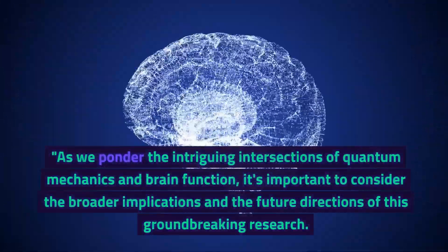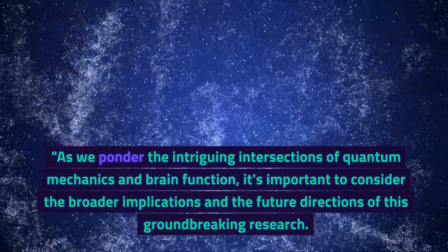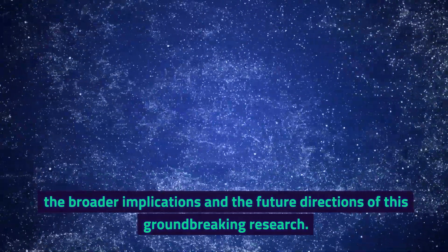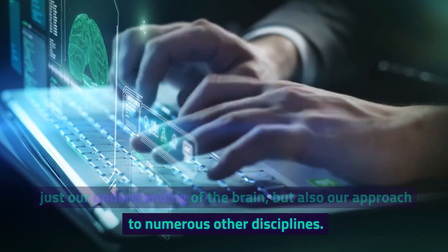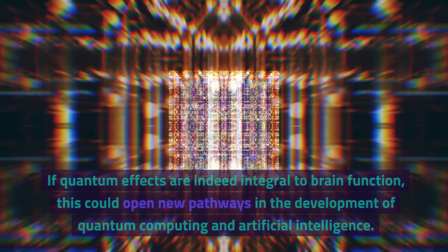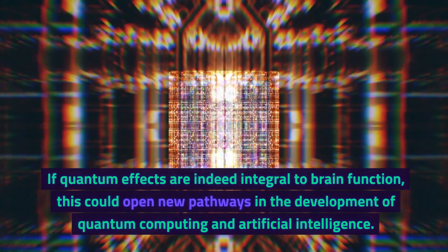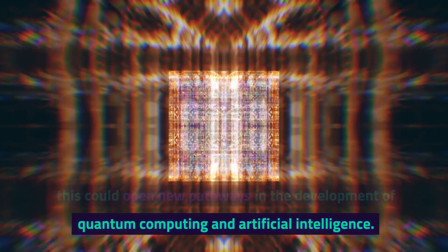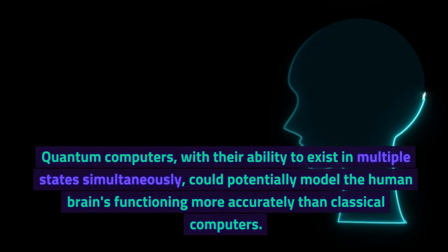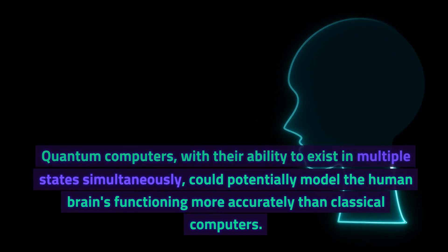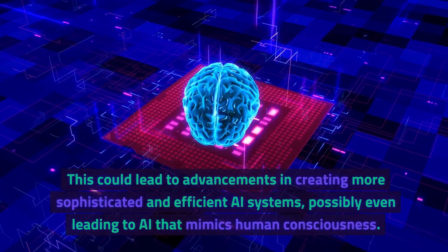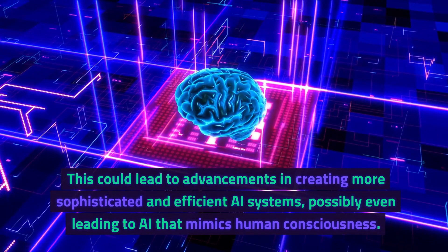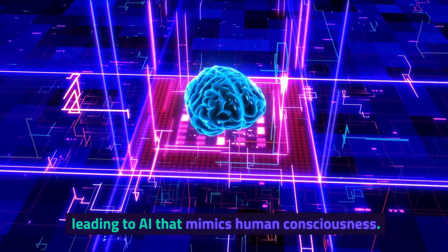As we ponder the intriguing intersections of quantum mechanics and brain function, it's important to consider the broader implications and the future directions of this groundbreaking research. The potential findings in this field could revolutionize not just our understanding of the brain, but also our approach to numerous other disciplines. If quantum effects are indeed integral to brain function, this could open new pathways in the development of quantum computing and artificial intelligence. Quantum computers, with their ability to exist in multiple states simultaneously, could potentially model the human brain's functioning more accurately than classical computers. This could lead to advancements in creating more sophisticated and efficient AI systems, possibly even leading to AI that mimics human consciousness.